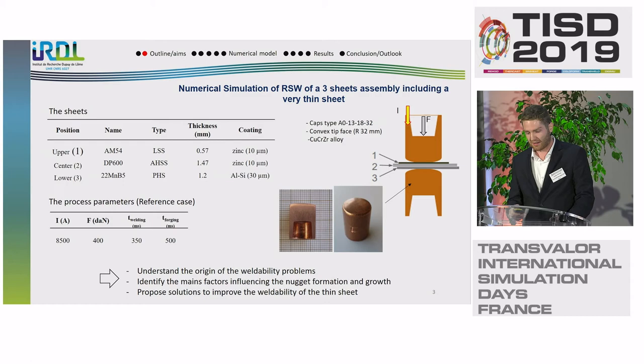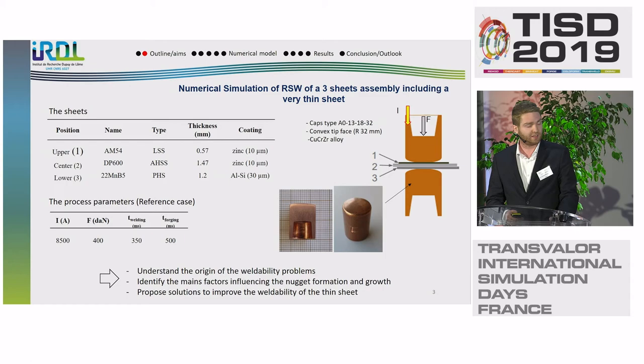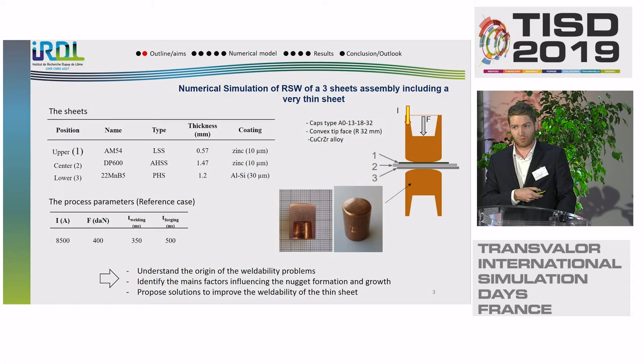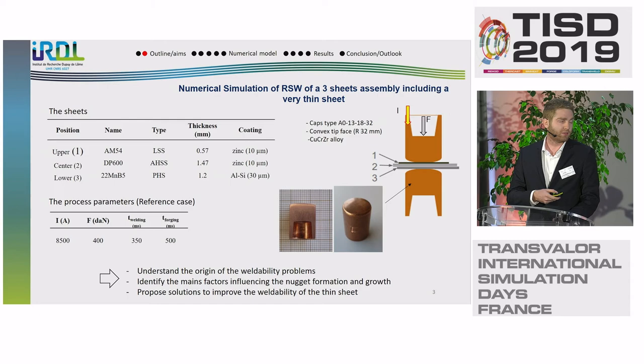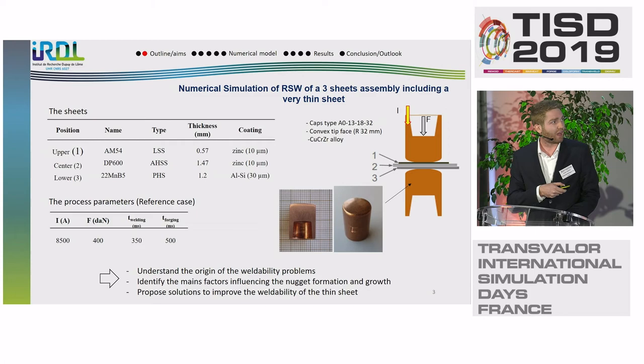A reference case has been defined based on experimental welding tests in order to check and validate the numerical simulation. The process parameters are 8.5 kA for the intensity, 4 kN for the load applied, 350 milliseconds for the welding time, and 500 milliseconds for the forging time. The electrodes are in CuCrZr alloy, and the curvature radius of the tips is 32 millimeters.